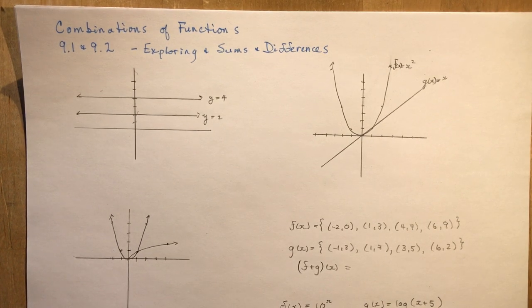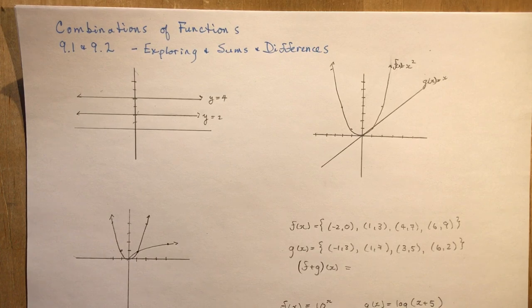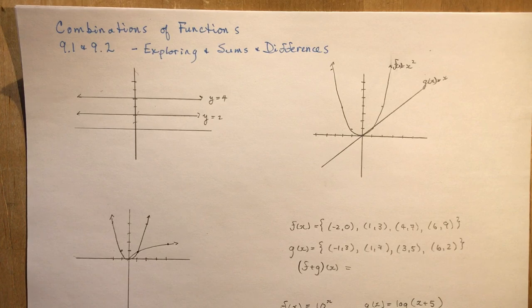Combinations of functions is the title of chapter 9. Today we're going to look at 9.1 and 9.2. 9.1 is basically an exploration lesson where you look at different graphs and try to figure out if you added a couple of them together, what would they look like. It's just a lot of reflecting, so there's really not much to say about it.